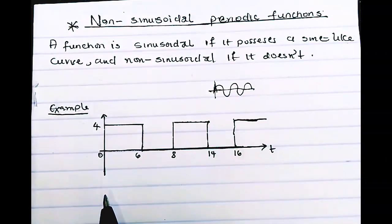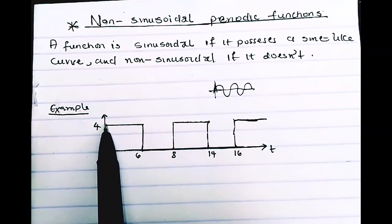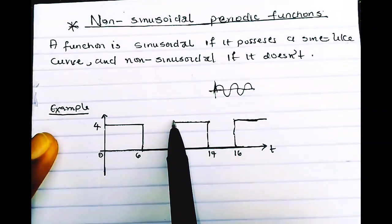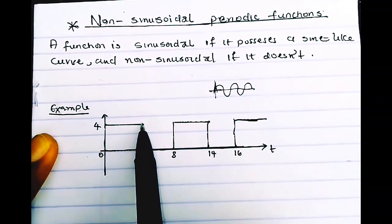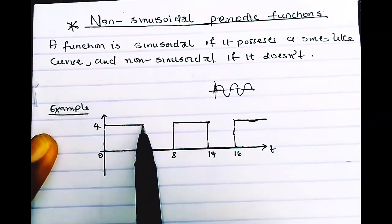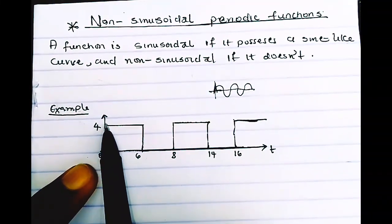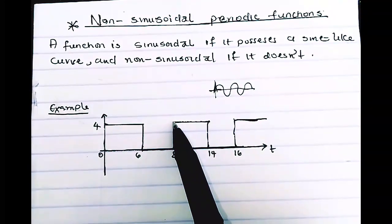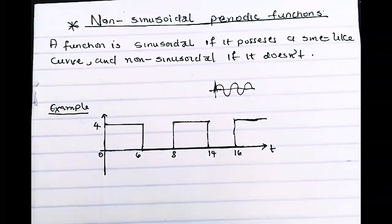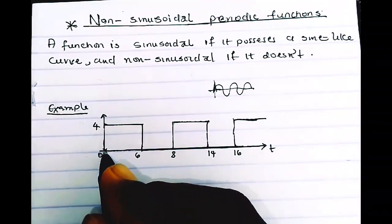We can actually denote our periods. The period is the space between the starting point and another starting point. If you look at this graph, it starts from zero here and this is another starting point. So the space between two starting points on a periodic graph is your period of oscillation.